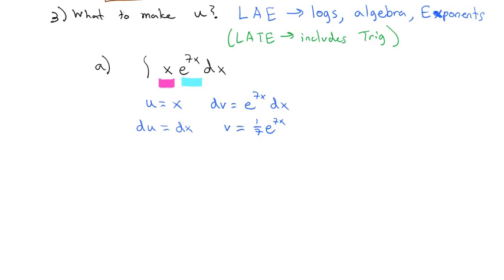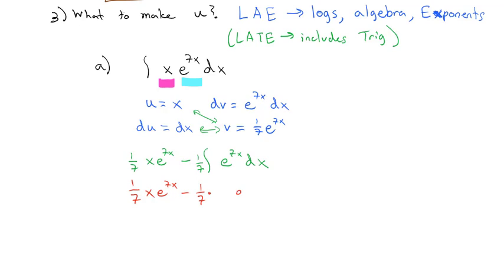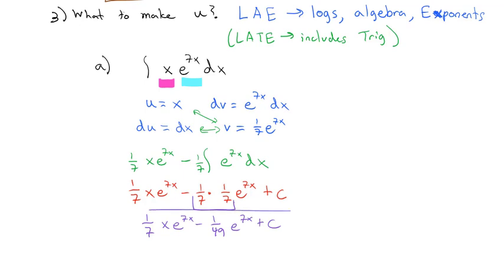Now that we have the pieces, we apply the formula: u times v gives us one seventh x e to the 7x, minus the integral of v du. Pulling the one seventh out, we just have the integral of e to the 7x dx — an integral that's much easier to solve. That gives us one seventh x e to the 7x minus one seventh times the antiderivative of e to the 7x, which is e to the 7x times one seventh, plus a constant. Cleaning up, our final answer is one seventh x e to the 7x minus one forty-ninth e to the 7x plus our constant.